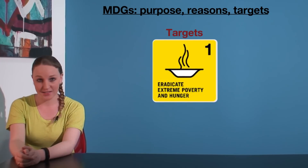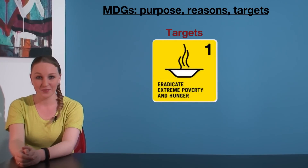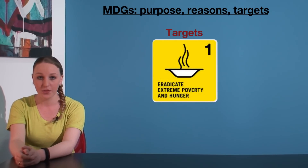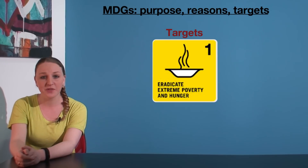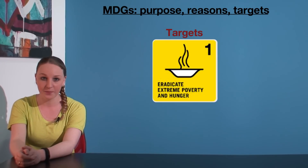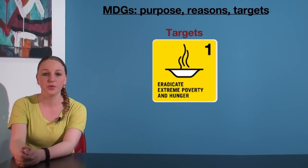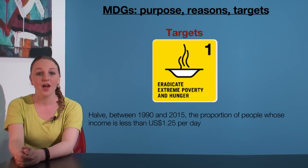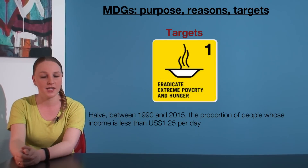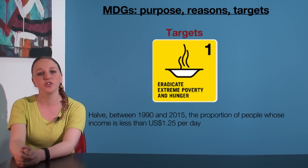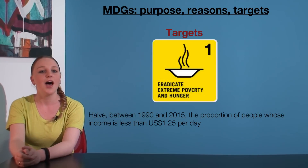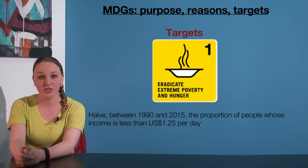That leaves us with only the targets to discuss. The targets are often the most difficult things to remember. They are quite specific, full of statistics, and there are a lot of them. For example, the first target of the first MDG is as follows: Halve, between 1990 and 2015, the proportion of people whose income is less than $1.25 per day.